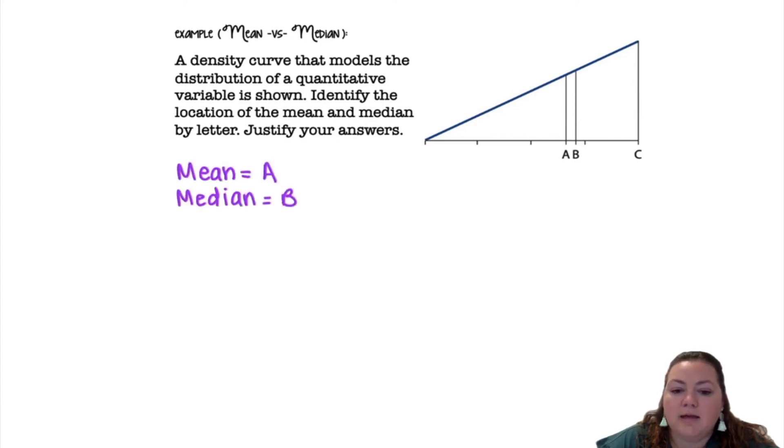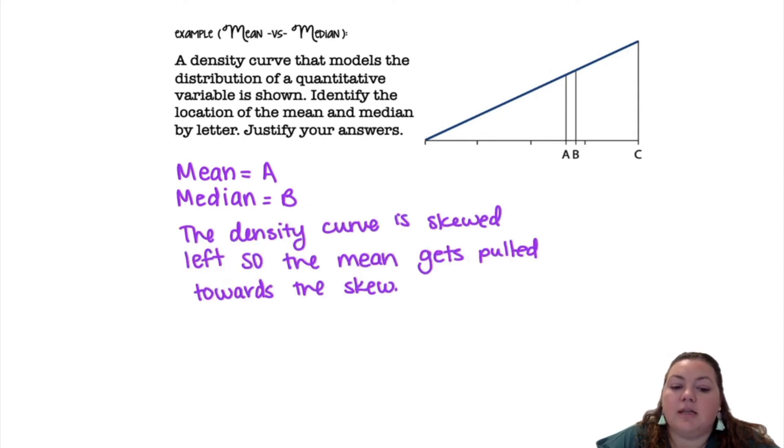So the mean would be A, the median would be B, and the density curve is skewed left. So the mean gets pulled towards the skew. Also, if you have this triangle, remember that area equals one half base times height when you're working with triangular density curves.